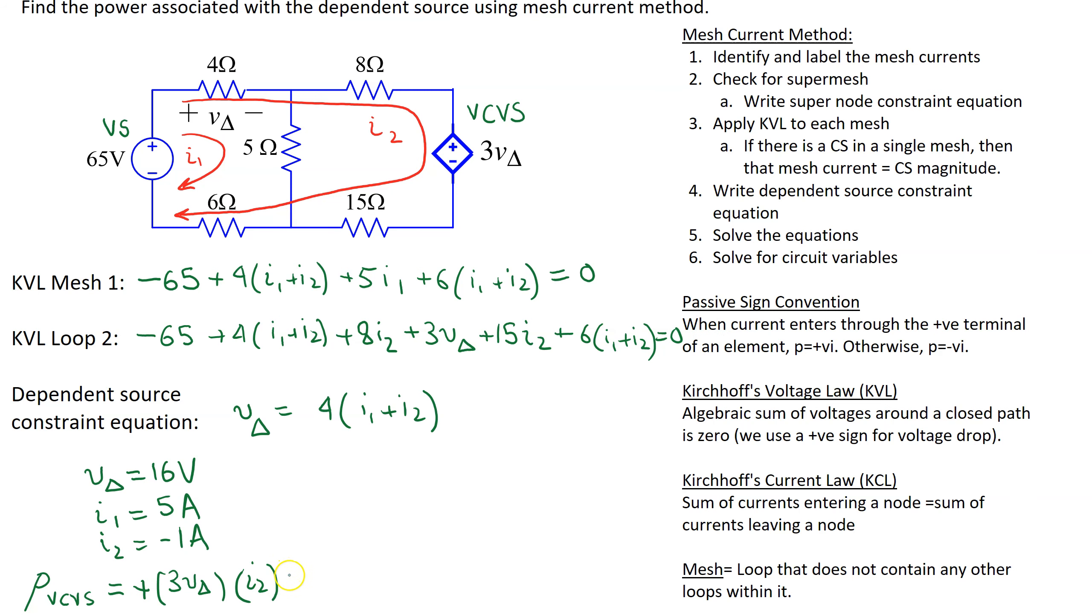Now substituting the values we get 3 times 16 and I2 is minus 1. So the final answer is minus 48 watt. So this shows that the dependent source is generating or supplying power in this circuit.